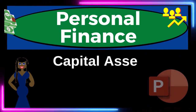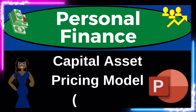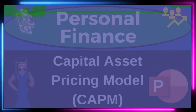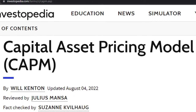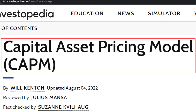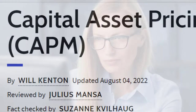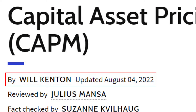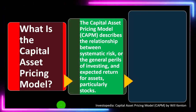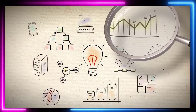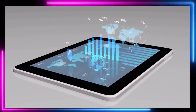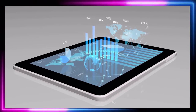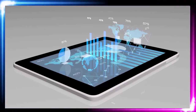This personal finance presentation covers the Capital Asset Pricing Model (CAPM). Most of this information comes from Investopedia. In prior presentations we've been looking at investment goals, strategies, and tools, keeping in mind the two major categories of investments: fixed income, often bonds, and equity, often common stock.